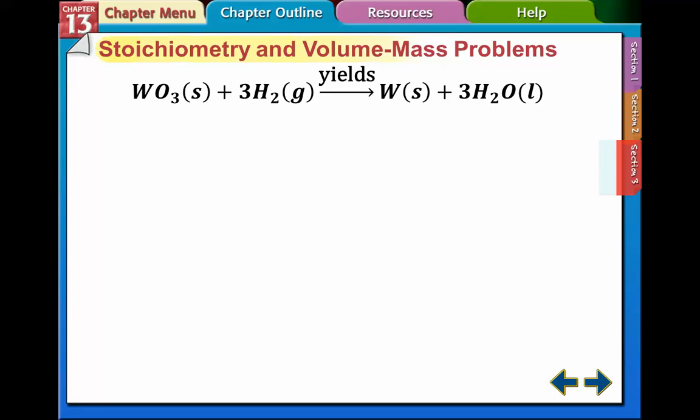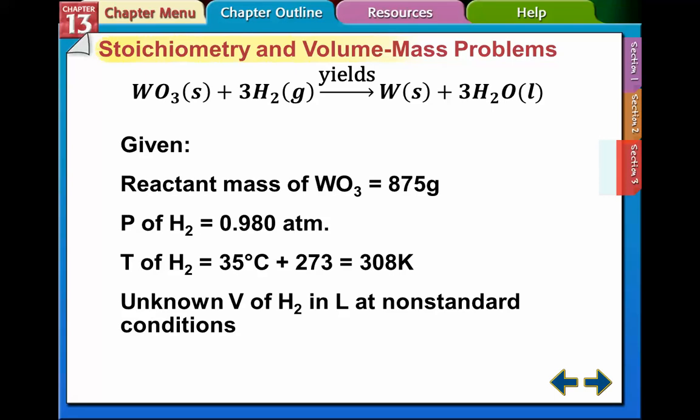The first thing we need to do is list out what we're given. We're given the reactant mass of 875, we're given the pressure of the hydrogen, and we're given the temperature of the hydrogen. Remember the temperatures in all these gas problems have to be converted to Kelvin, so we're just going to go ahead and convert that to Kelvins.